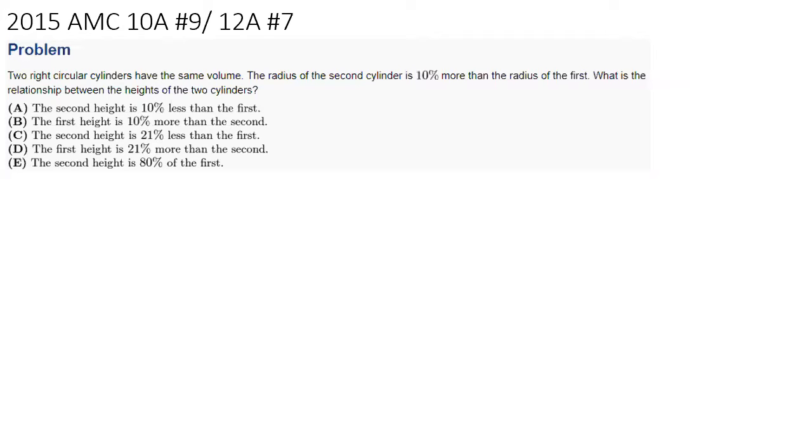Two right circular cylinders have the same volume. The radius of the second cylinder is 10% more than the radius of the first. What is the relationship between the heights of the two cylinders?